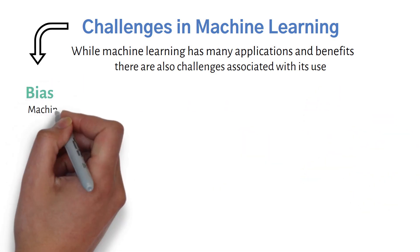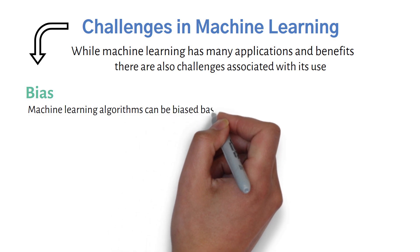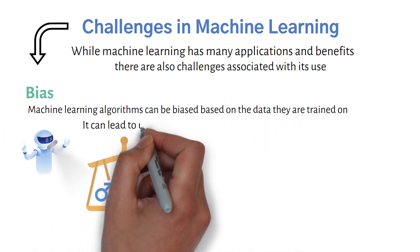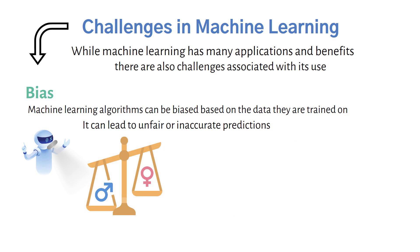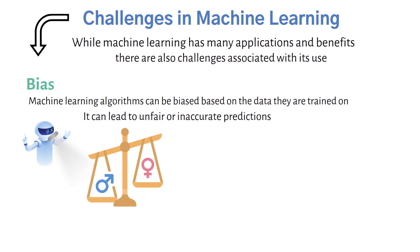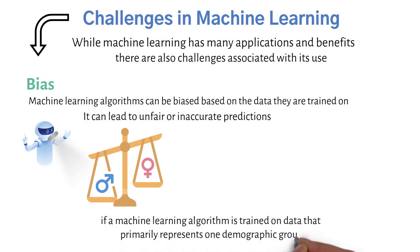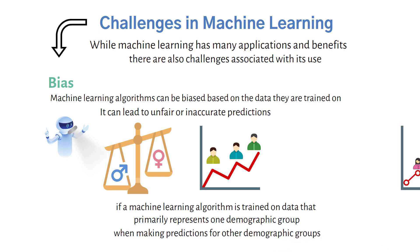Bias: machine learning algorithms can be biased based on the data they are trained on, which can lead to unfair or inaccurate predictions. For example, if a machine learning algorithm is trained on data that primarily represents one demographic group, it may not perform well when making predictions for other demographic groups.